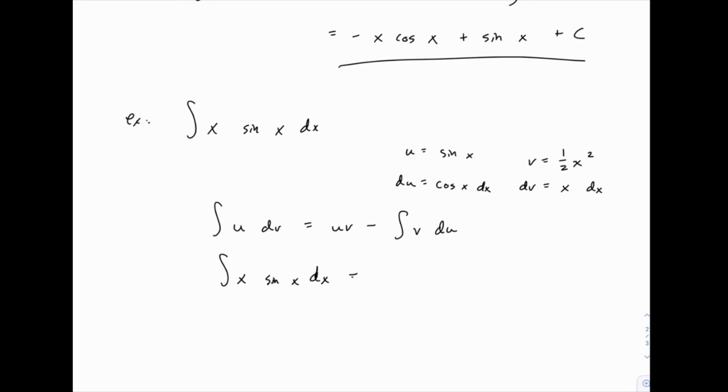If we plug everything in, u times v is going to be the sine of x times one half x squared. So I'll write that as one half x squared sine of x. So far so good. Minus the integral of v times du. So that would be one half x squared cosine of x dx. Be careful with your dx's. Make sure dv and du both have a dx that go with them.